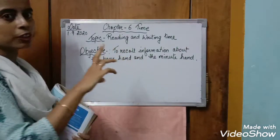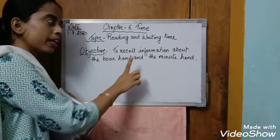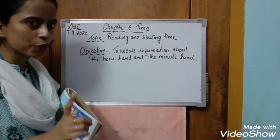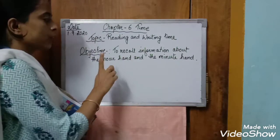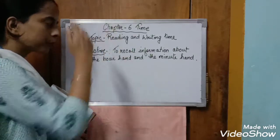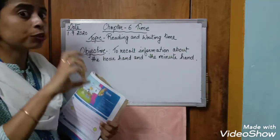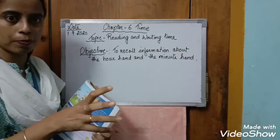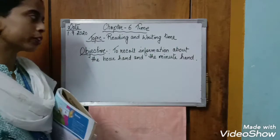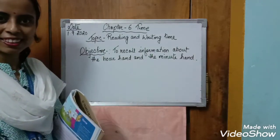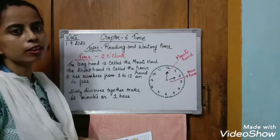The objective of today's class is to recall the information about the hour hand and the minute hand. As you children know, a clock has two hands: the hour hand and the minute hand. We are going to recall those parts, then learn how to read the time and how to write the time. So let's start. The topic is reading and writing time.